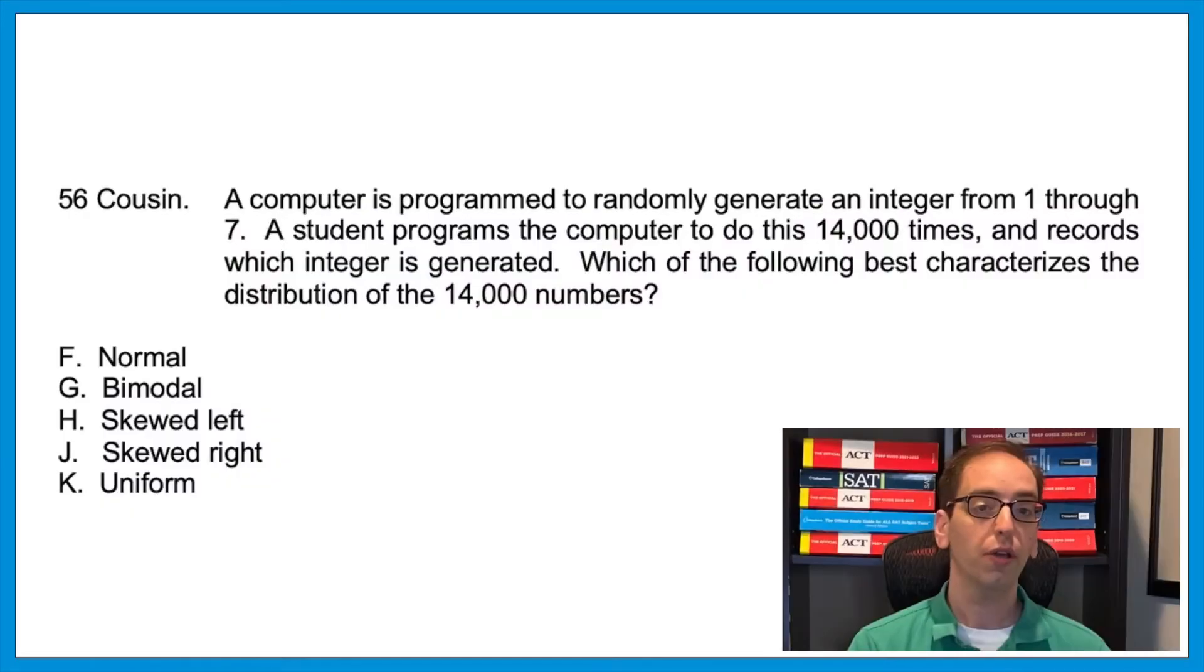You guys hear me say on the channel all the time how the ACT is unfair. They don't just throw in harder topics at the end. They throw in topics at the end that never appeared on the test before. Here are some that popped up on the April exam for the first time. Question 56 looked like this. A computer is programmed to randomly generate an integer from 1 through 7. A student programs the computer to do this 14,000 times and records which integer is generated. Which of the following best characterizes the distribution of the 14,000 numbers. Normal, bimodal, skewed left, skewed right, or uniform. This is a classic example of the ACT being the ACT. If you know what the words in the choices mean, it's not a hard question. However, these terms never came up on any previous TIR report before. And that's where the test is a jerk, throwing in something that never came up before. So let's define these terms.